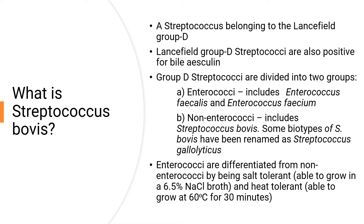How do you differentiate enterococci from non-enterococci — meaning Enterococcus faecalis and Enterococcus faecium from Streptococcus bovis? Enterococci are heat tolerant, meaning they can grow at 60°C for 30 minutes, but non-enterococci are heat sensitive and cannot grow at that temperature. Also, enterococci are salt tolerant and can grow at 6.5% sodium chloride, but non-enterococci — that is Streptococcus bovis — are salt sensitive and cannot grow at 6.5% sodium chloride.